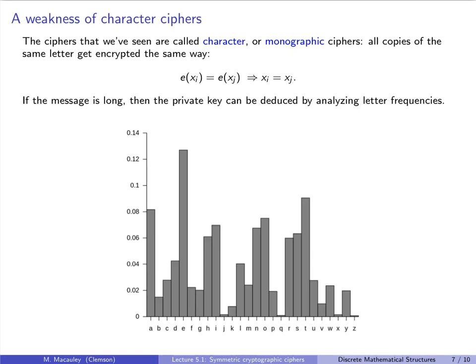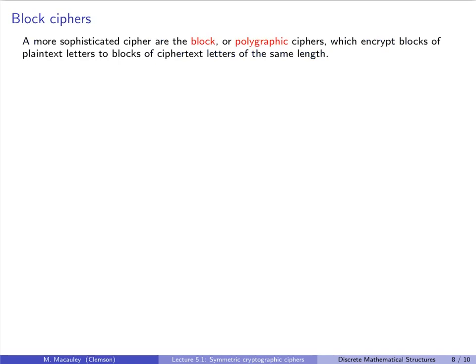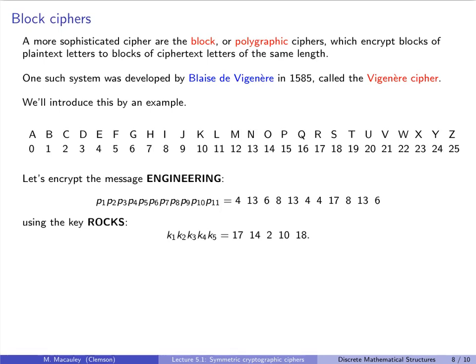A more sophisticated cipher than the monographic ones are the block or polygraphic ciphers. And these encrypt blocks of plain text letters to blocks of ciphertext letters of the same length. One such system was developed by Blaise de Vigenère in 1585, and it's called the Vigenère Cipher. We'll introduce this by an example. So once again, here's our table for reference. And let's encrypt the message engineering, which in base 26, it's 11 letters, and here they are: 4, 13, 6, 8, 13, 4, 4, 17, 8, 13, 6. And we will use the key rocks, R-O-C-K-S, which is 17, 14, 2, 10, 18.